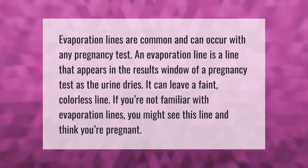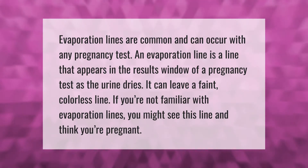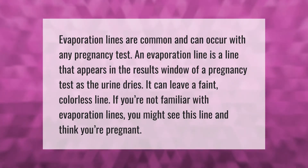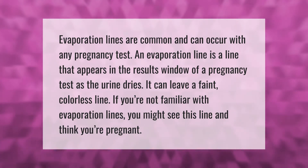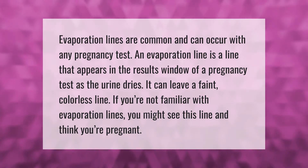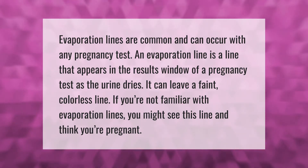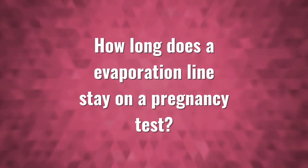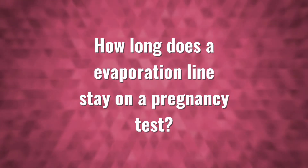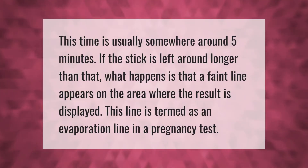Evaporation lines are common and can occur with any pregnancy test. An evaporation line is a line that appears in the results window of a pregnancy test. As the urine dries, it can leave a faint colorless line. If you're not familiar with evaporation lines, you might see this line and think you're pregnant.